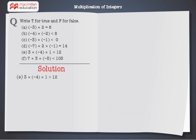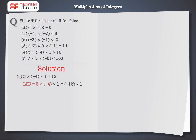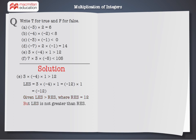E: 3 into minus 4 into 1 is greater than 12. LHS equals 3 into minus 4 into 1, which equals minus 12 into 1, which equals minus 12. Therefore, LHS is not greater than RHS. Hence, 3 into minus 4 into 1 is greater than 12 is false.